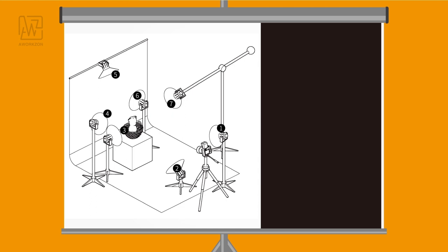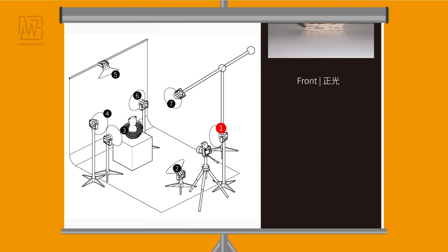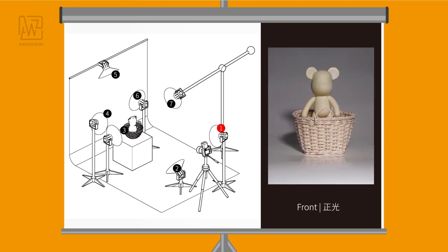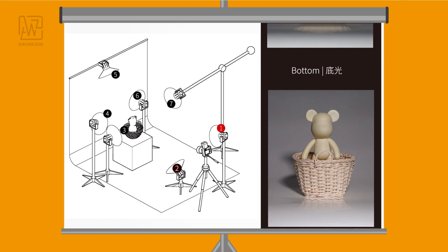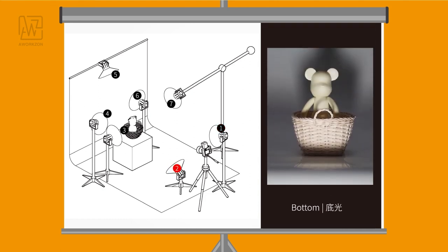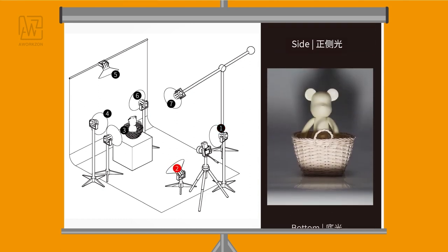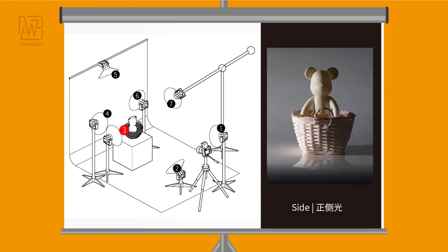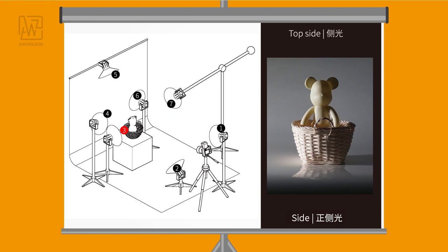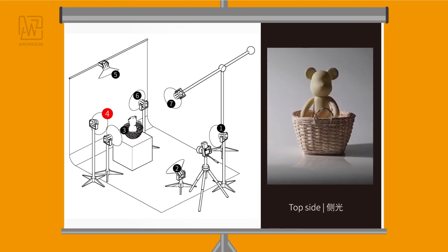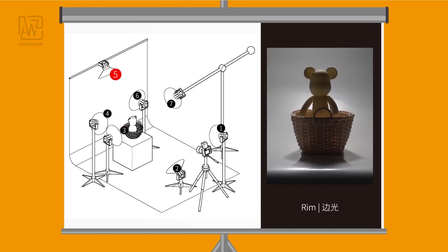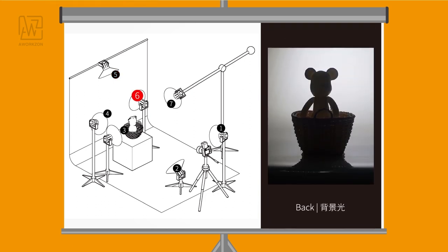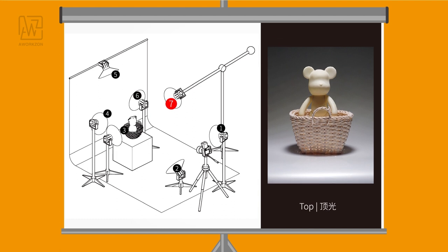Let's look at those different light positions: front, bottom, side, top side, rim, back, and top.